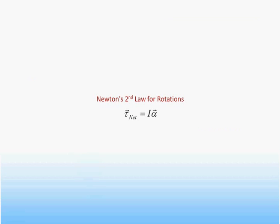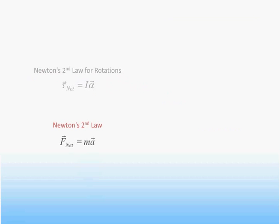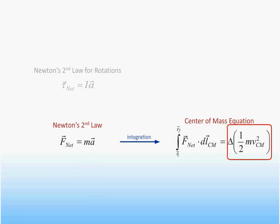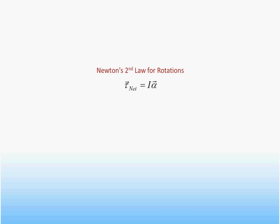We now want to look at the rotational dynamics equation in the context of energy. Recall that by integrating Newton's second law for a system of particles, we obtain the center of mass equation — namely, that the total macroscopic work done on the system is equal to the change in the center of mass kinetic energy, calculated as if the system were a point particle having the total mass of the system and moving with the velocity of the center of mass. We can obtain an exactly analogous equation for rotational motion relative to the center of mass.